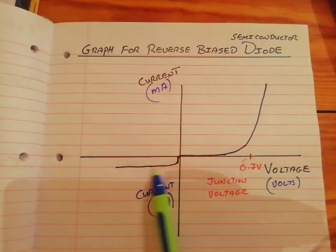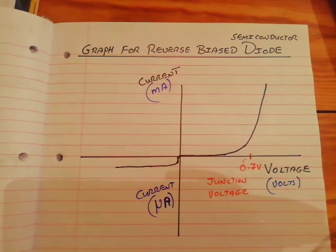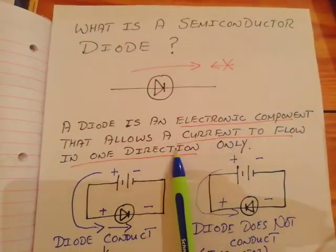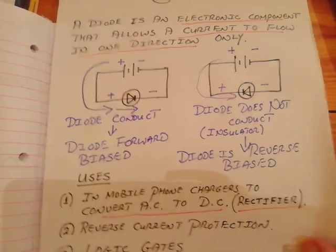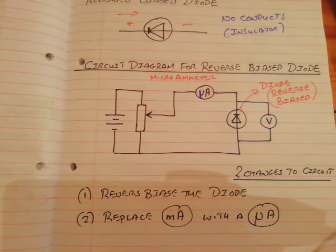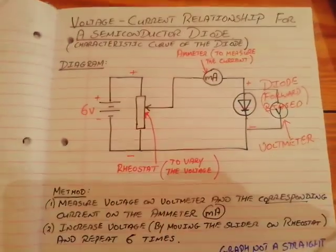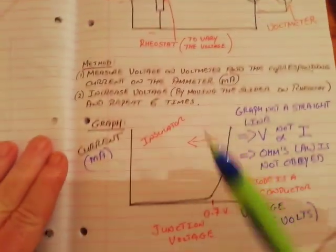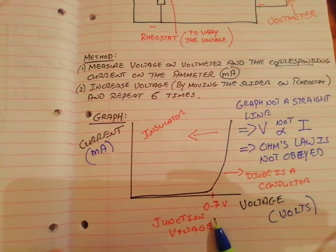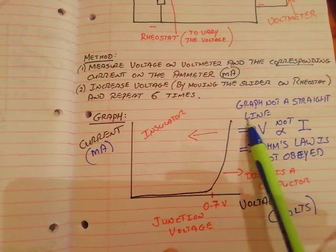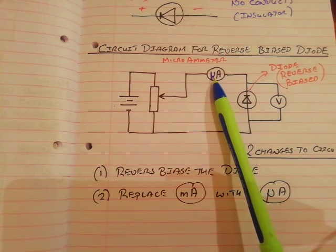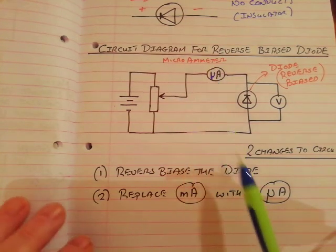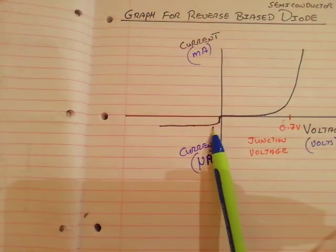You need to learn that graph. When the diode is forward biased — positive voltages — the current shoots up at 0.7 volts. When it's reverse biased — negative voltages, below the axis — you get a very small current measurable only in microamps. You will never have to plot that reverse part, but you could be asked what it looks like.